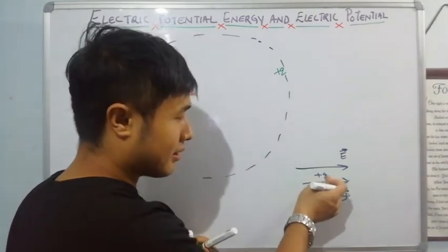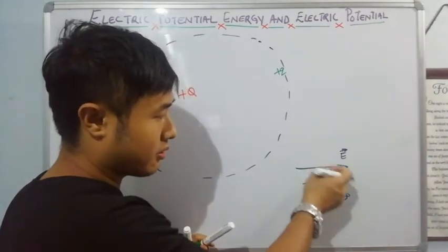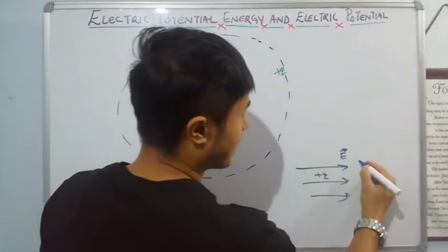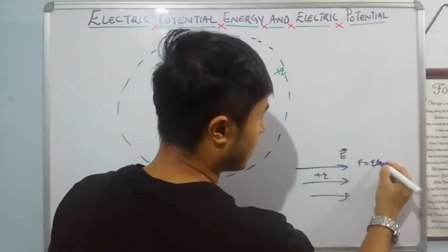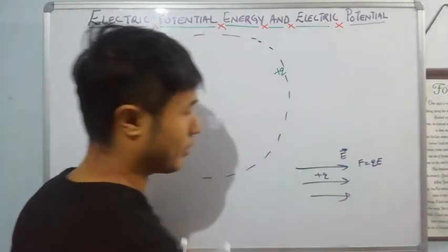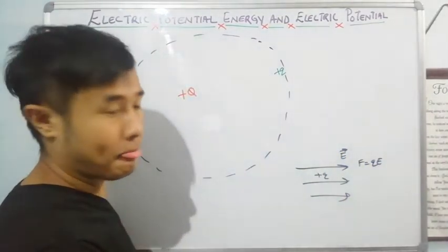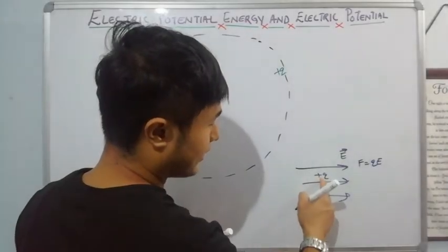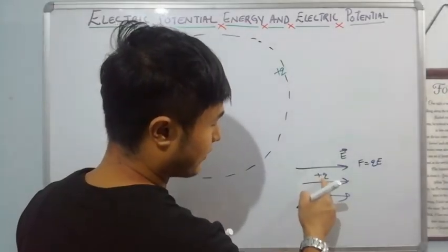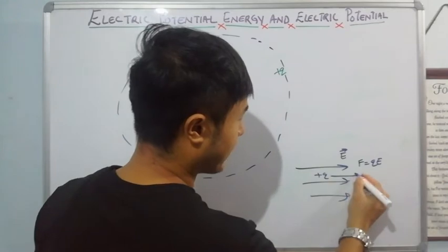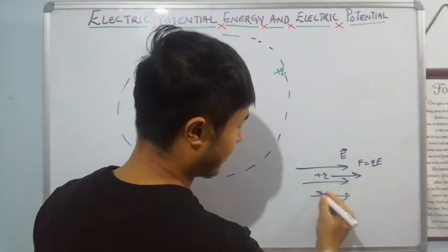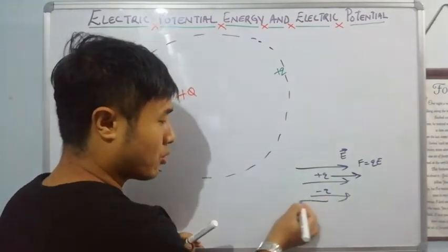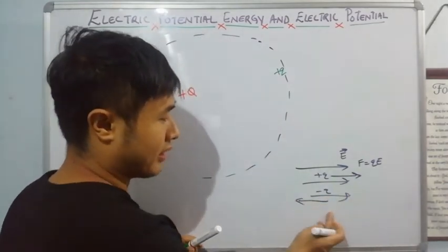As soon as we place a charge in this electric field, this charge will experience a force, and the magnitude of that force is given by QE. If the charge is positive, then the direction of force will be along the direction of the electric field. And if it is negative, then its direction is opposite to the direction of the electric field.